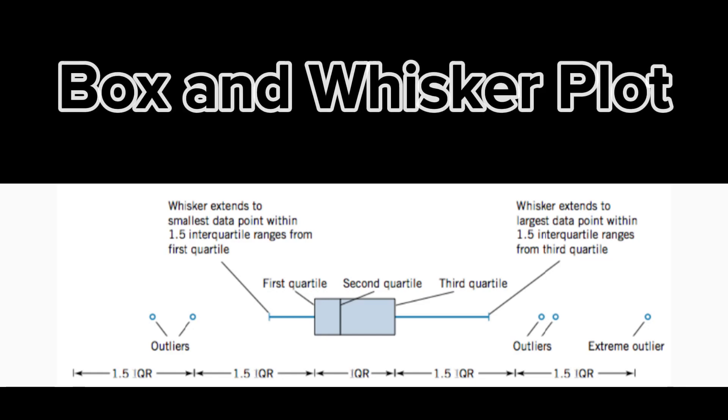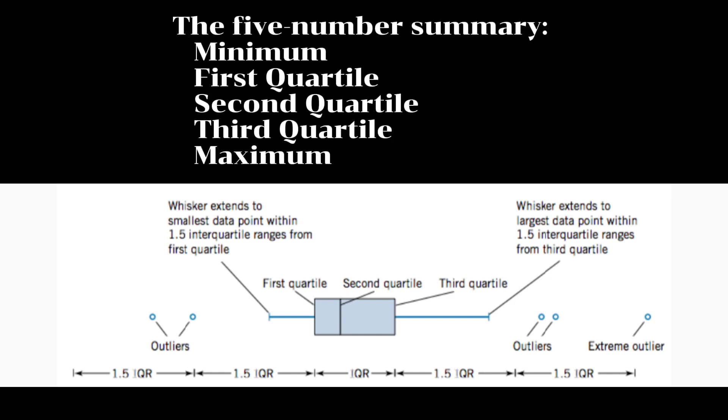A box and whisker plot, also known as a box plot, is a standardized way of displaying the distribution of data based on a five-number summary.